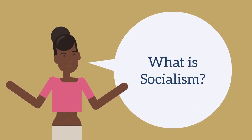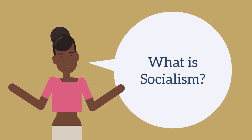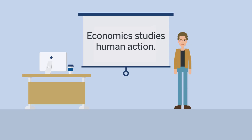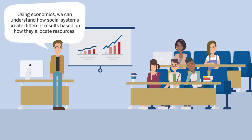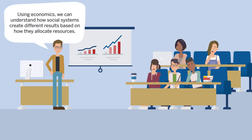What is socialism? Economics studies human action. Using economics, we can understand how social systems create different results based on how they allocate resources.